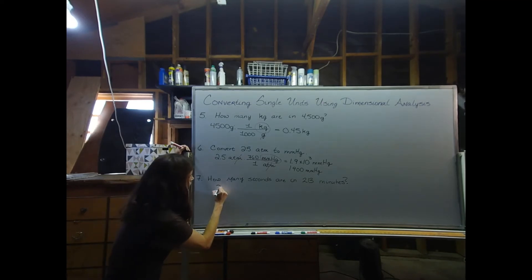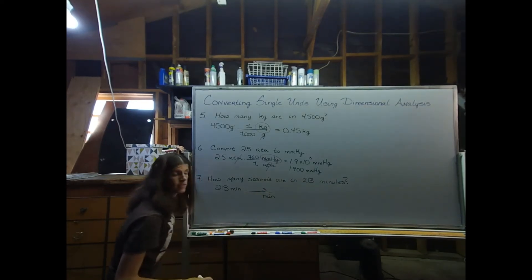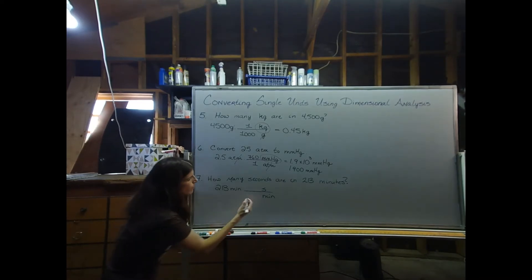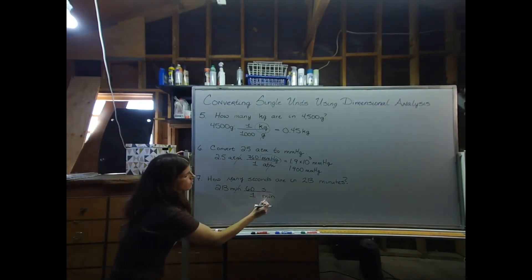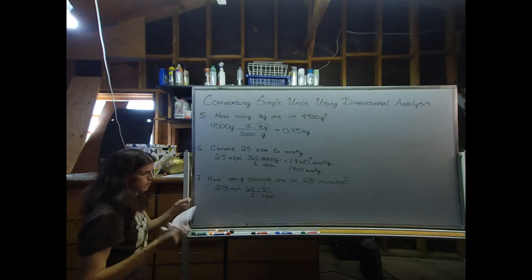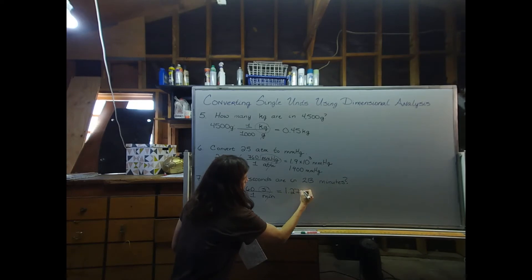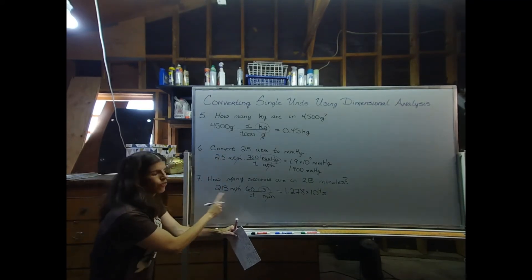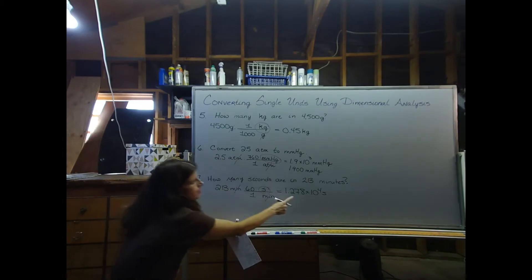Next: 213 minutes. I want to get rid of minutes, so that goes in the denominator, and I want to convert to seconds. Hopefully everyone remembers that one minute has 60 seconds. The minutes cancel, leaving seconds. In the calculator, 213 times 60 gives 1.278 times 10 to the fourth seconds. There are three sig figs in 213, and 60 is exact, so we need three sig figs in the answer.